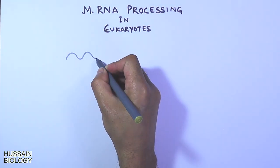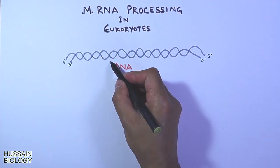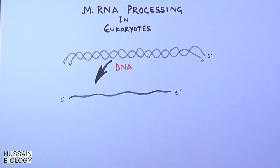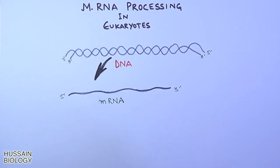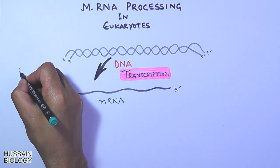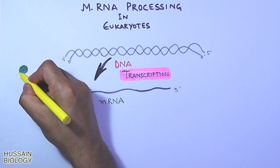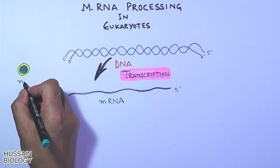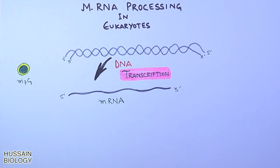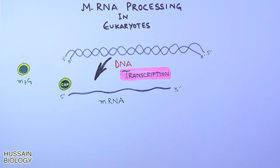First of all, we have a DNA molecule, and from this DNA molecule we get an mRNA molecule through the process of transcription. The first event that takes place is mRNA capping. It must be noted that mRNA capping is a co-transcriptional process, meaning it occurs during transcription, just after the initiation process.